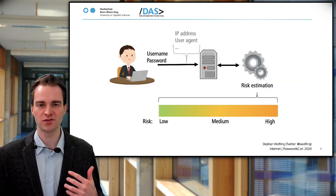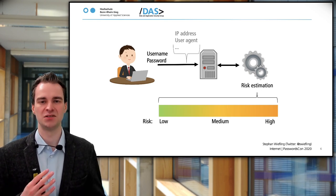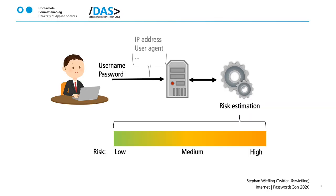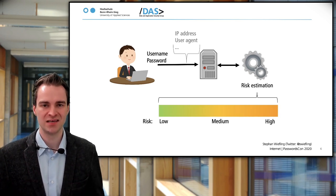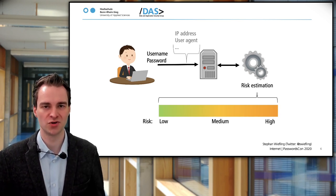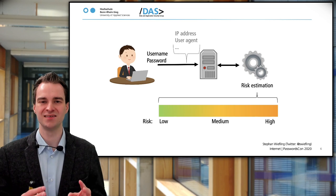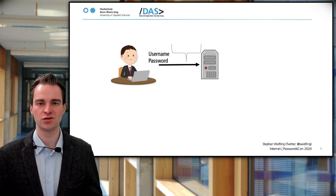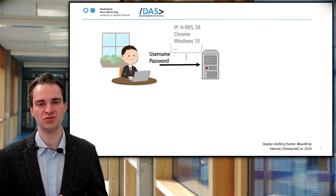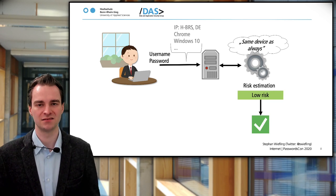In this case, you can use risk-based authentication, and that's what online services like Google are doing. It works as follows: you type in your username and password at a website, and when you submit the login form, you're also submitting additional metadata available in the context — for example, what kind of IP address you're using, what kind of device you're using, and so on. All this information is compared with your previous login history in the backend, and RBA then calculates the risk. If you're signing in from your university as you normally do, that's a low risk, and you just get signed in as always.